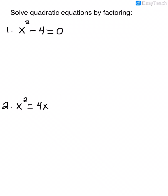And then we factor. In number 1, everything is already on one side equal to 0. There's not a greatest common factor between x squared and negative 4. Since this is a binomial, we want to see if this is a difference of perfect squares — and it is. To factor using difference of perfect squares, we have two sets of parentheses. We take the square root of the first term — the square root of x squared is x — and the square root of 4 is 2. We do one of each sign: plus and minus equals 0.